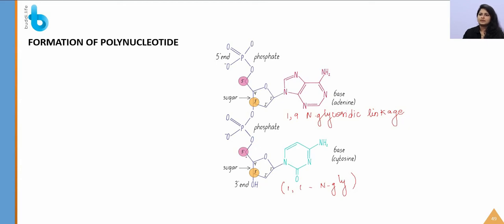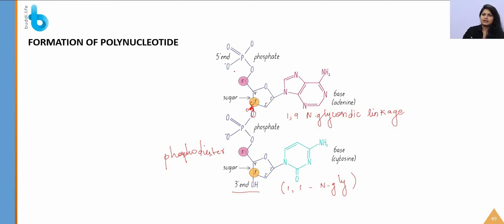The fifth carbon of the sugar forms a phosphoester bond with the phosphate group. When the phosphate of one nucleotide bonds with the third carbon (3′ OH) of another nucleotide's sugar, this is called a phosphodiester linkage, forming a dinucleotide. Many nucleotides added in this way form a polynucleotide. In the polynucleotide chain, the free hydroxyl from the 3′ carbon is the 3′ end, and the free phosphate is the 5′ end.